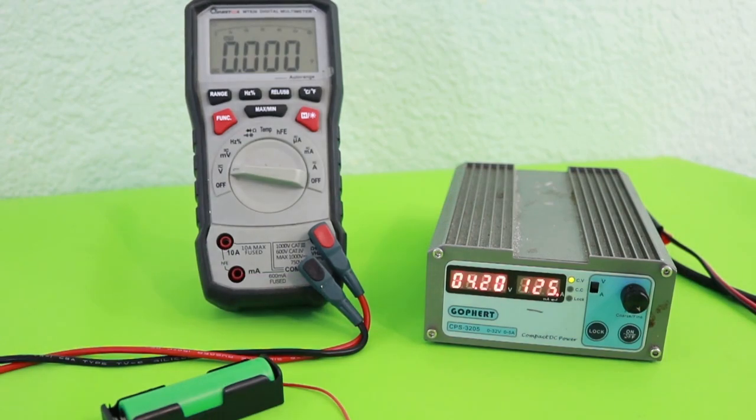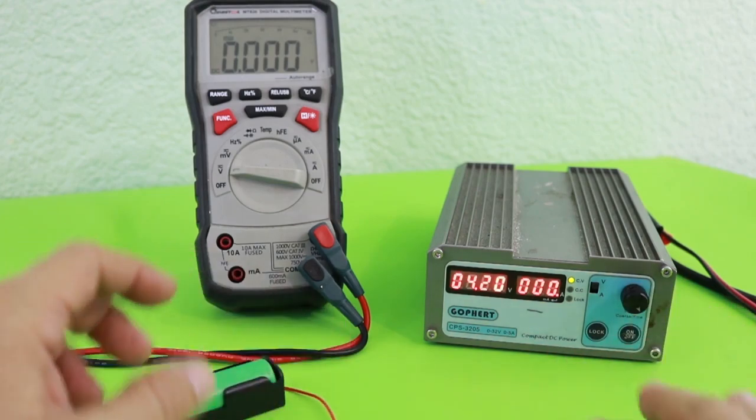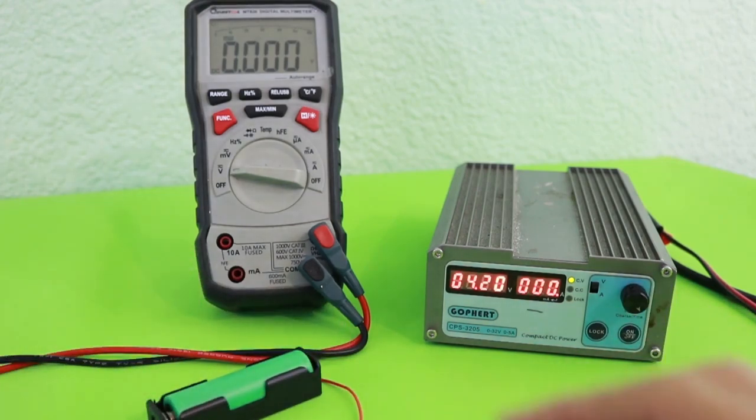The current has dropped to 125 milliamps and our battery is fully charged. We can now disconnect the power supply and let's check the voltage.